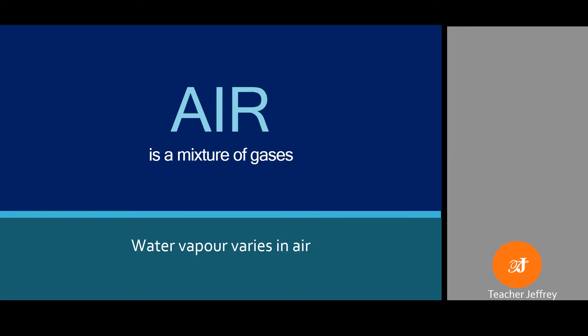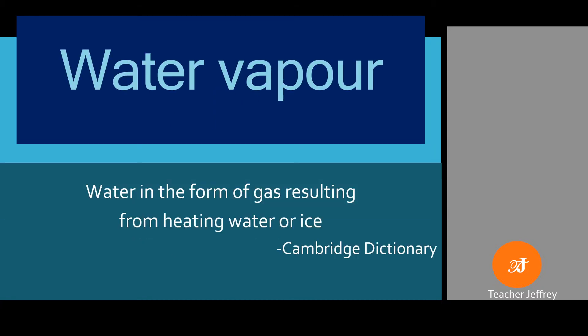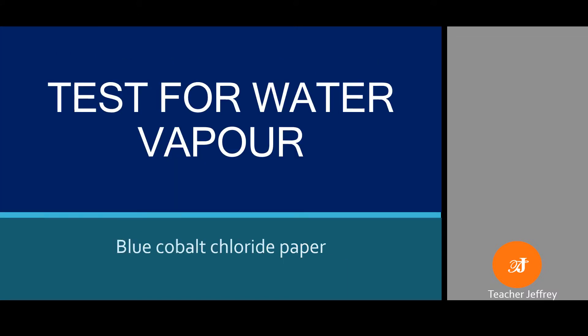Air is a mixture of gases; it is colorless and odorless. One of these gases present in air is water vapor. According to the Cambridge Dictionary, water vapor is water in the form of gas resulting from heating water or ice — so water vapor is water in gaseous form. Our topic for today is the test for water vapor. This is Teacher Jeffrey — come and dive in.